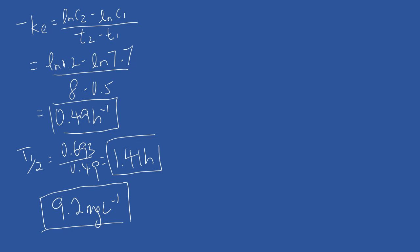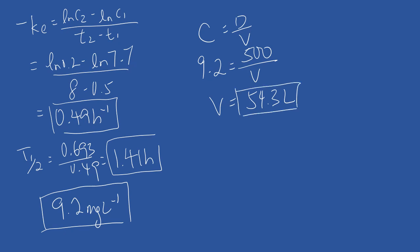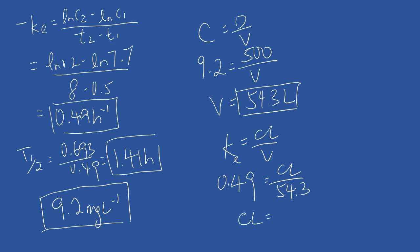For part three, the y-intercept is 9.2 — your answer may differ slightly depending on how you read the graph. For part four, to identify the volume: concentration equals dose divided by volume, so 9.2 equals 500 mg divided by volume, giving a volume of 54.3 liters. For part five, the clearance: ke equals clearance divided by volume, so 0.49 equals clearance divided by 54.3, giving clearance of 26.6 liters per hour.